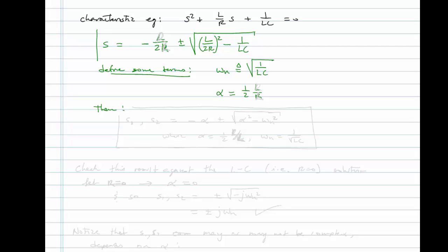Let's find the roots then. S equals minus R over 2L plus or minus the square root of R squared over 4L squared minus 1 over LC. This is a little cluttered, so let's define some terms. Let's define omega n, it's 1 over square root of LC. Let's also define a term called alpha, and we'll say that is R over 2L. Then the roots are going to be S1 comma S2, because there's actually two values of S, minus alpha plus or minus square root of alpha squared minus omega n squared. Where alpha equals R over 2L and omega n equals 1 over square root of LC.